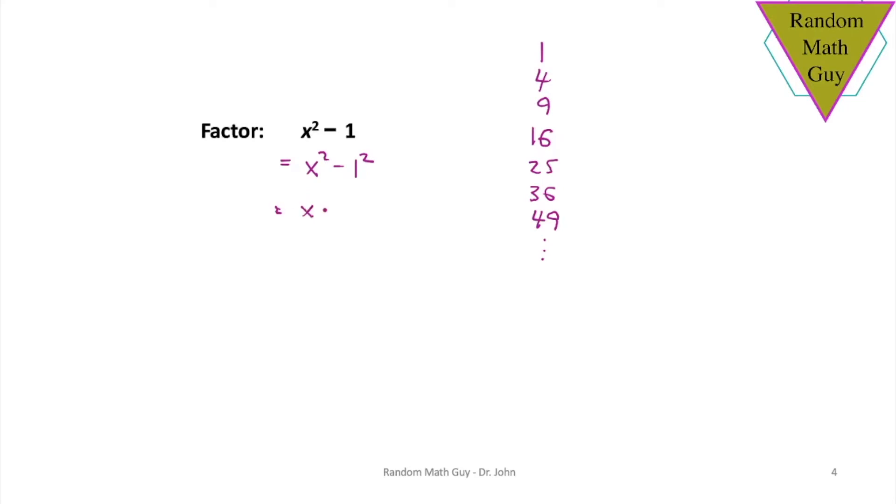In this case, you would write the answer as x plus 1, x minus 1. As a footnote, if this was a plus sign, then you cannot factor it. So it must be a difference of squares. That's why the word difference is in the name.